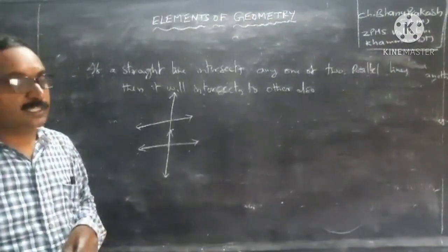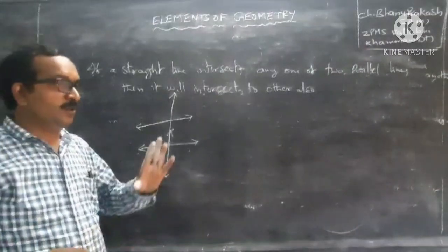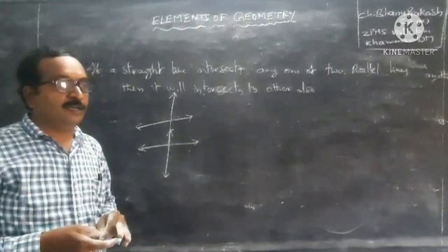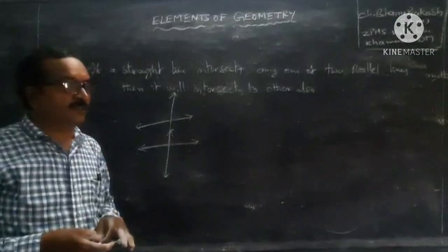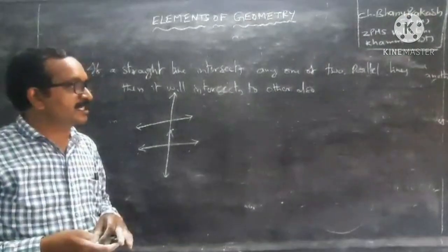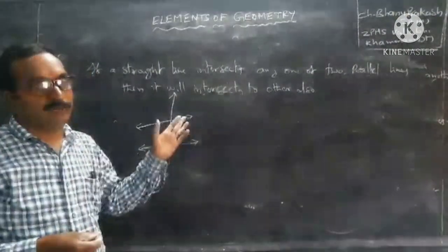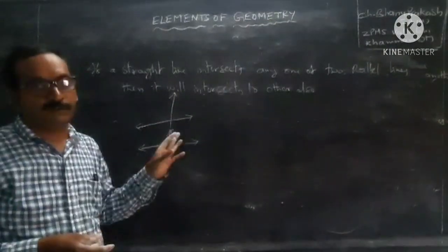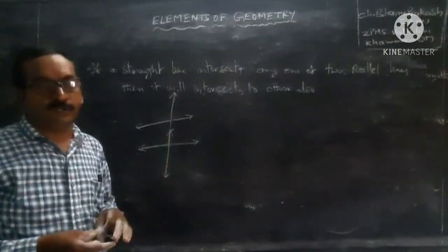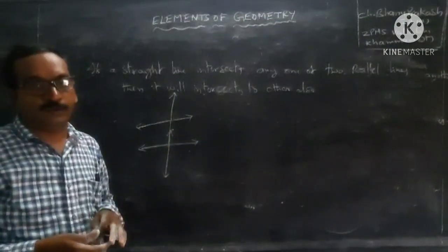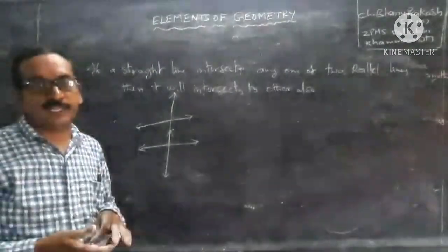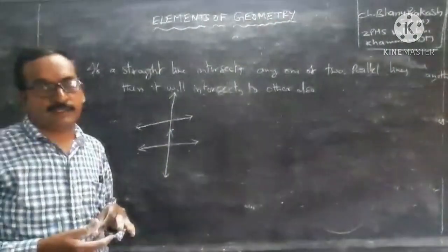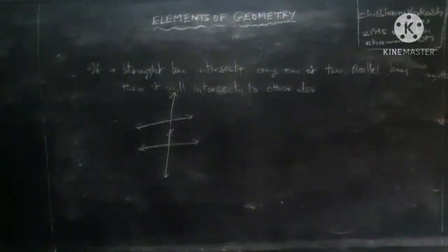Okay students, these are the Euclidean postulates, and some postulates equivalent to the fifth postulate were given by various mathematicians, which we have discussed. Now we will do some examples based on these postulates.